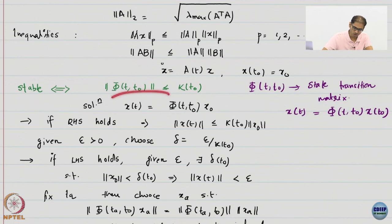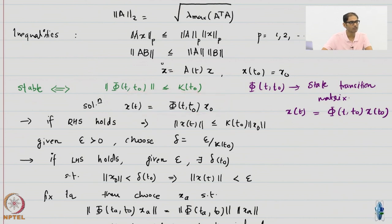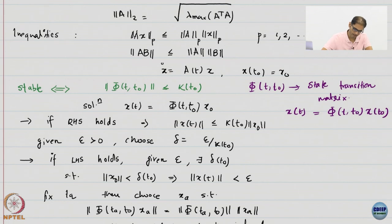The solution looks like this. This is how you write the solution for a linear system in terms of the state transition matrix, and you are already given initial condition x0.